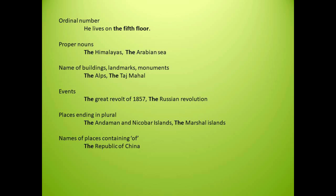Now let's see some more cases where the definite article 'the' comes into use. When ordinal numbers come, we use the article 'the.' In English, we have ordinal numbers and cardinal numbers. Cardinal numbers are counting numbers: 1, 2, 3, 4, 5. Ordinal numbers show the position: 1st, 2nd, 3rd. So when ordinal numbers come, you apply the article 'the.' For example: he lives on the 5th floor. He received the first prize.